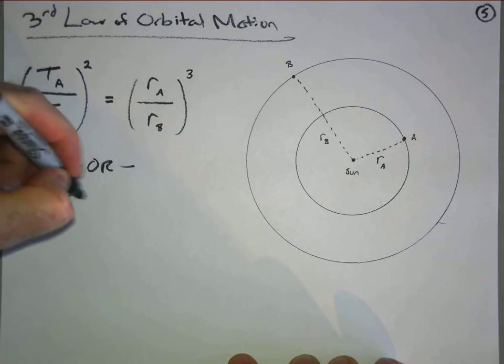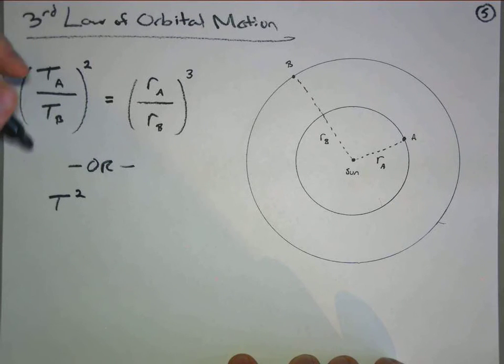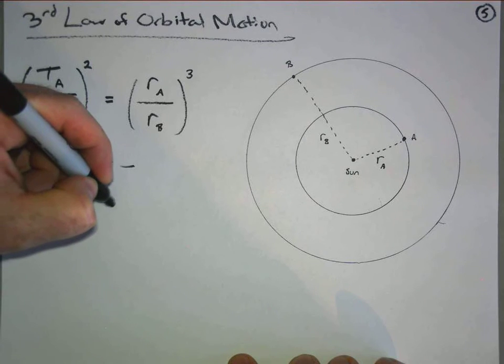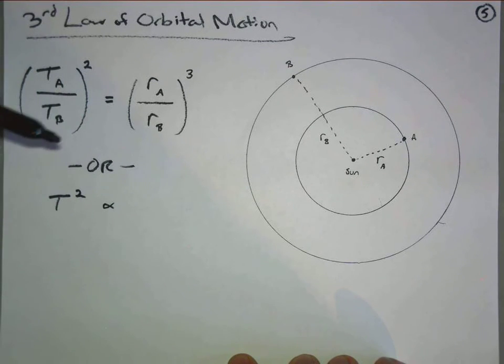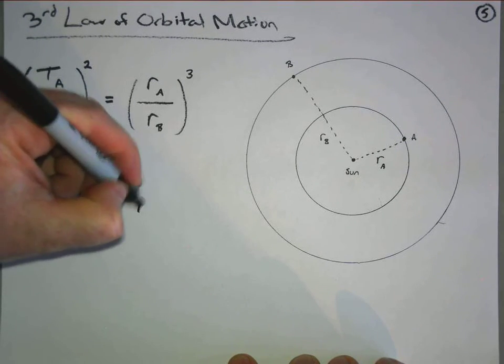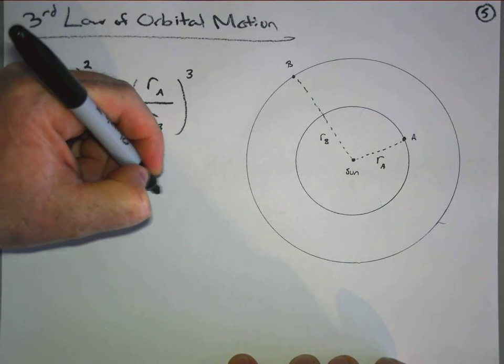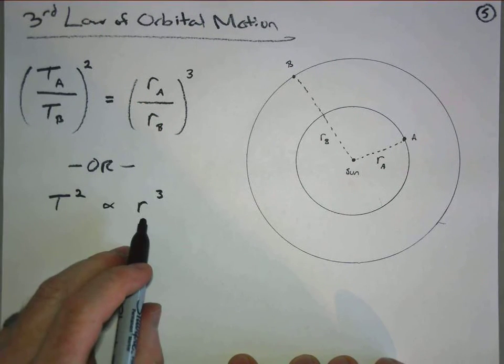The square of the orbital period of any planet or any moon or any satellite - I'm not gonna put an equal sign, I'm gonna put this, that means proportional - is proportional to the cube of the radius, orbital radius of that planet.